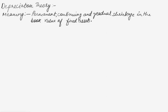It also includes amortization of the asset whose useful life is predetermined. There can be various forms of depreciation — such as depreciation and amortization — and these are all considered forms of depreciation. Depreciation has a significant effect in determining and presenting the financial position and results of operations of an enterprise.